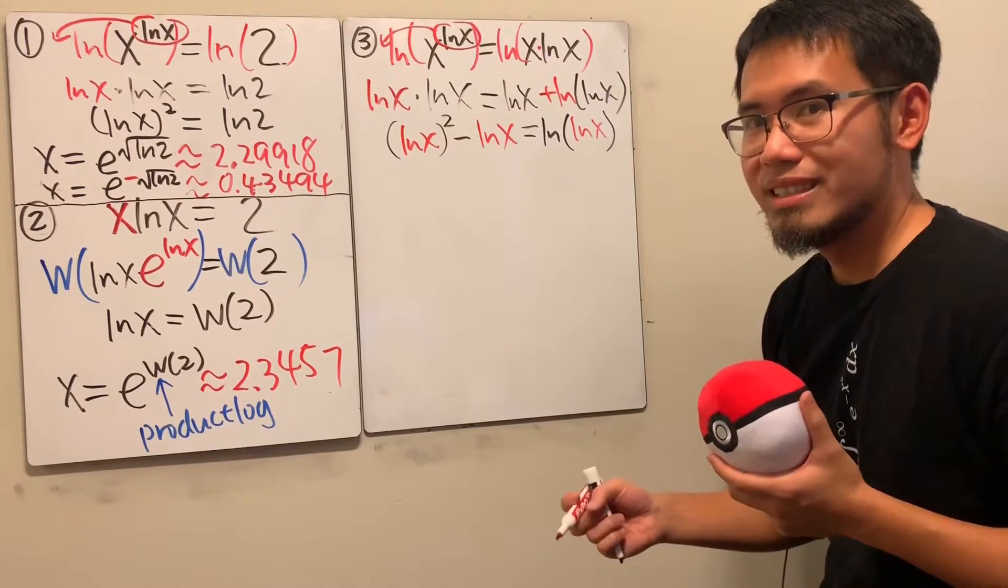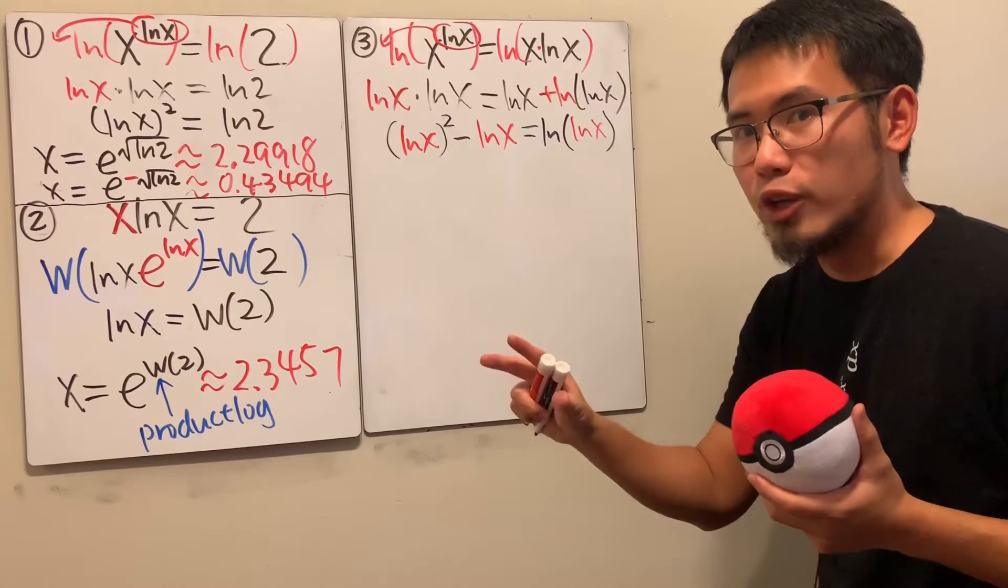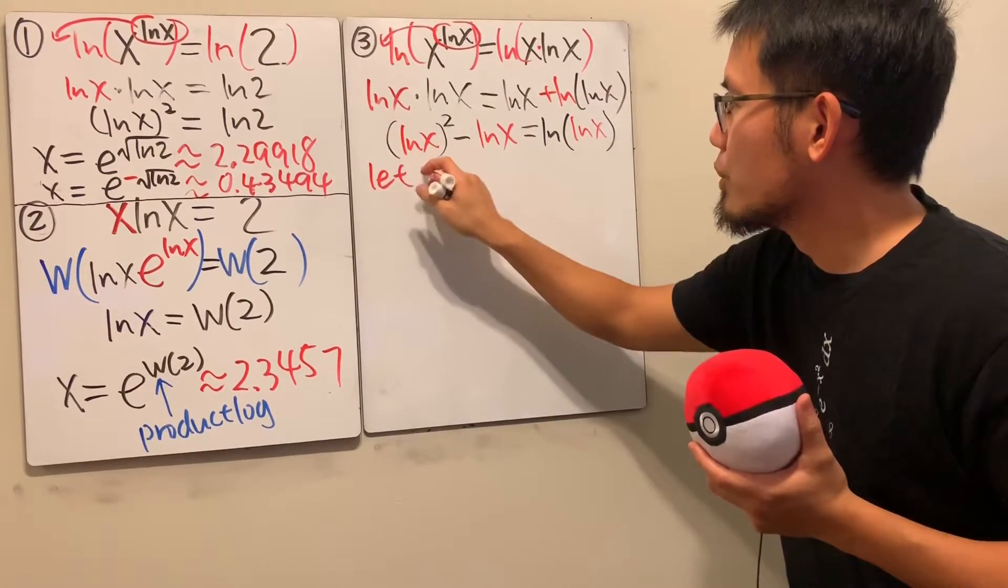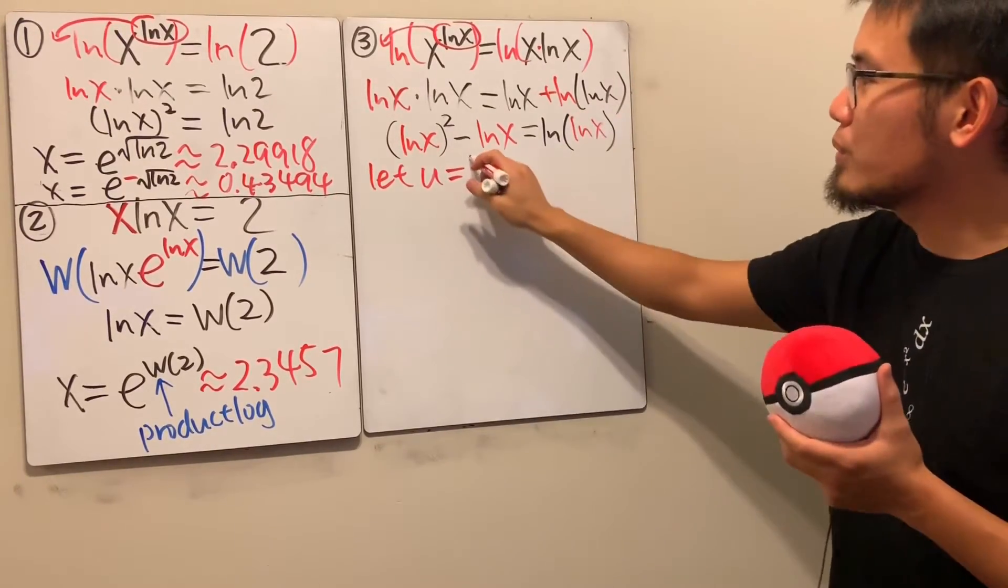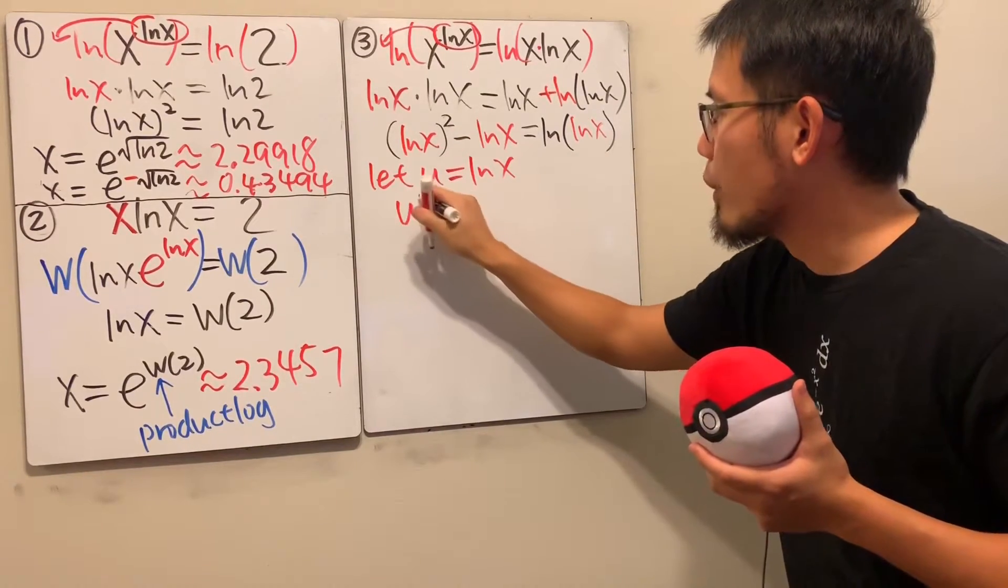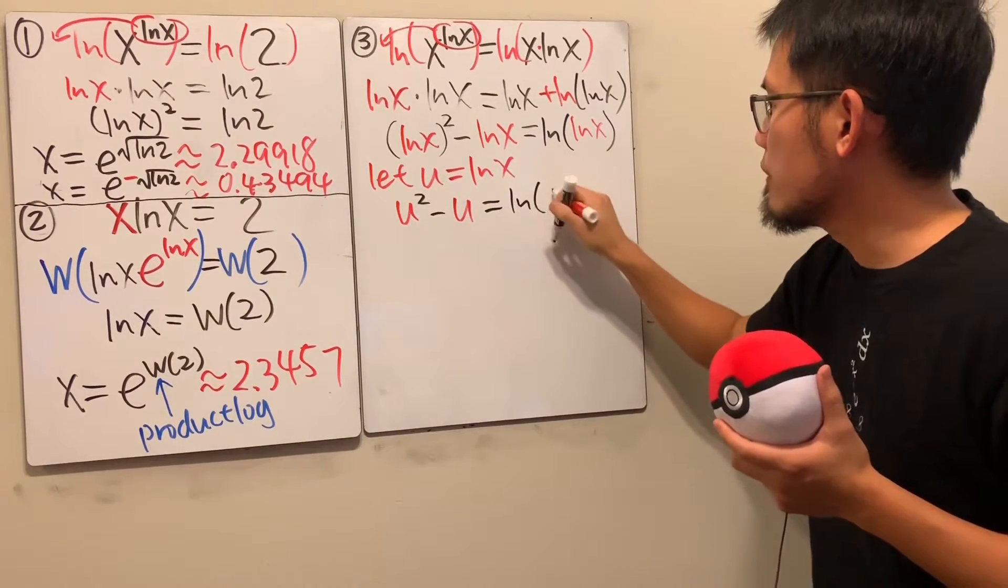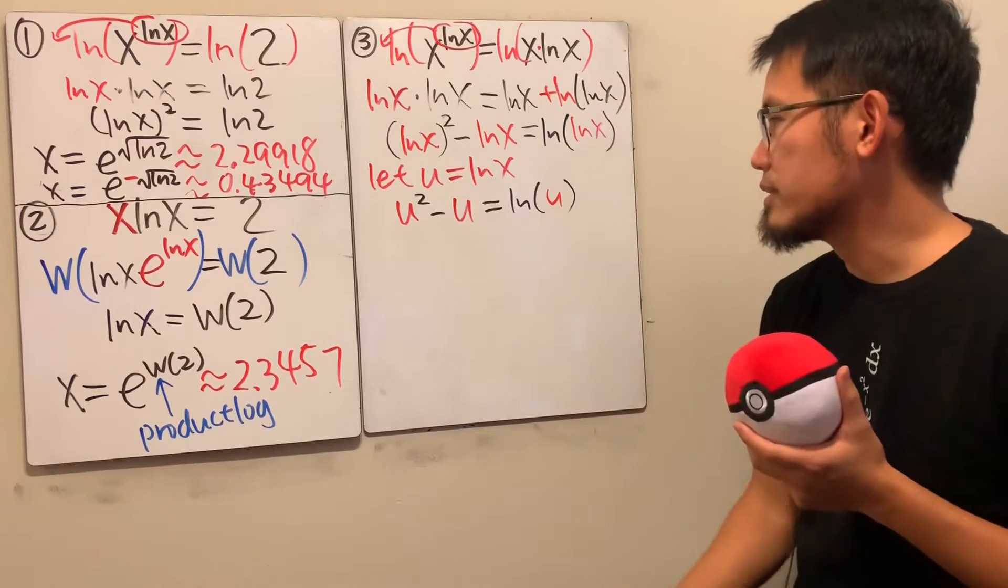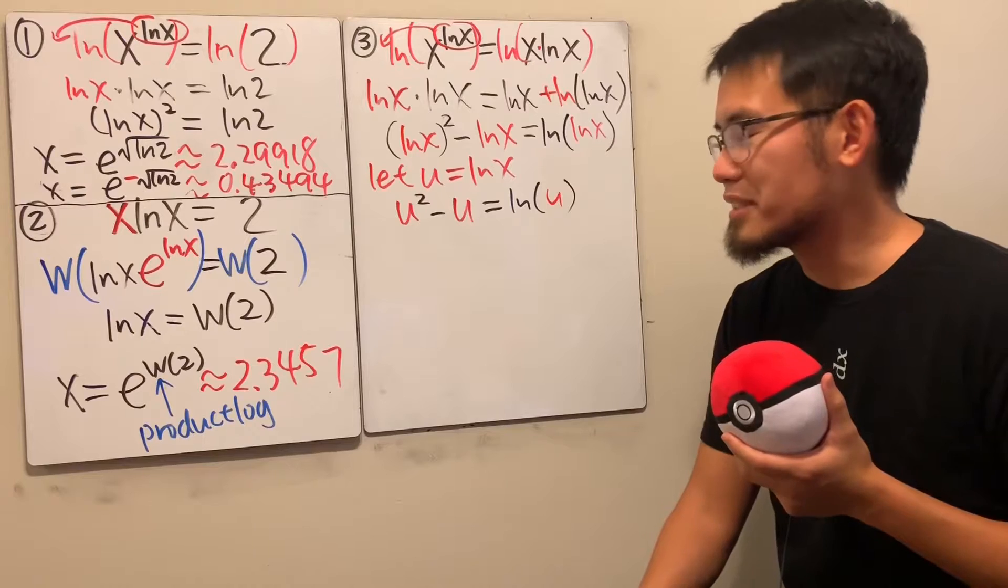This is actually pretty good. Now, this is how I'm going to approach this. Because look at this. You can treat this as an equation in terms of natural log. So I will just say let u, because I like you. I like you guys. So let u equal to natural log of x. Then we'll see this becomes u squared minus u. And that's equal to natural log of u. Like that. And now, how can we solve this, though?